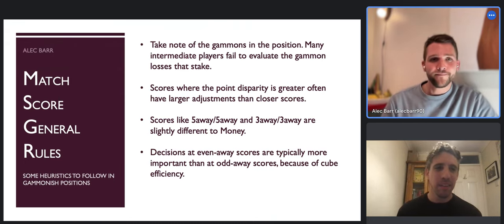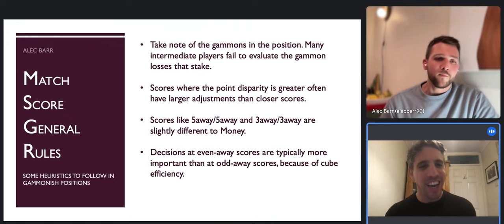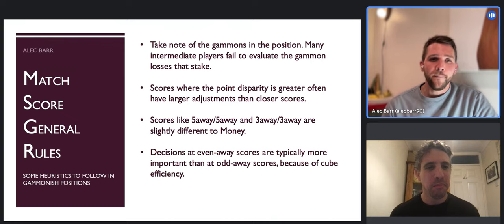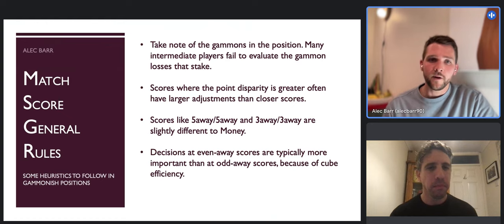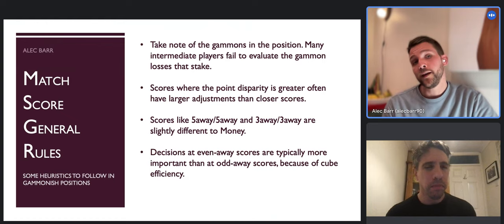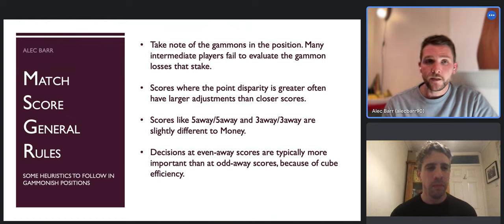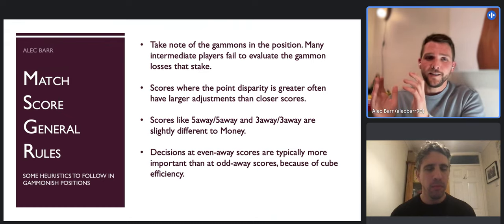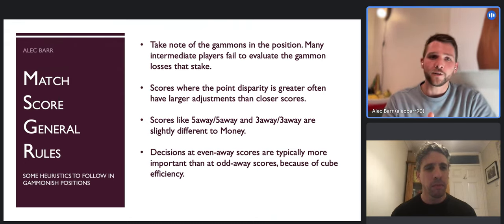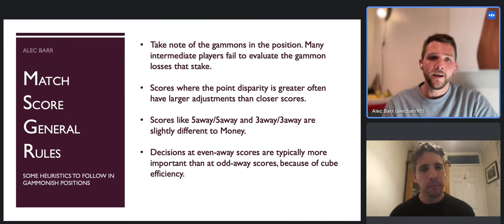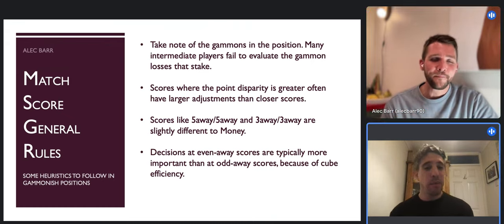That should be a trigger as well as the score disparity. The greater the point disparity, very often the greater the adjustments you make from money. There are exceptions - we know that five-away five-away and three-away three-away are different to money and it's worth learning in what way they're different. It's probably worth mentioning they're different for gammonish positions in a different way to non-contact positions. None of what we've talked about is referencing non-contact positions - this is all where there are gammons at stake.